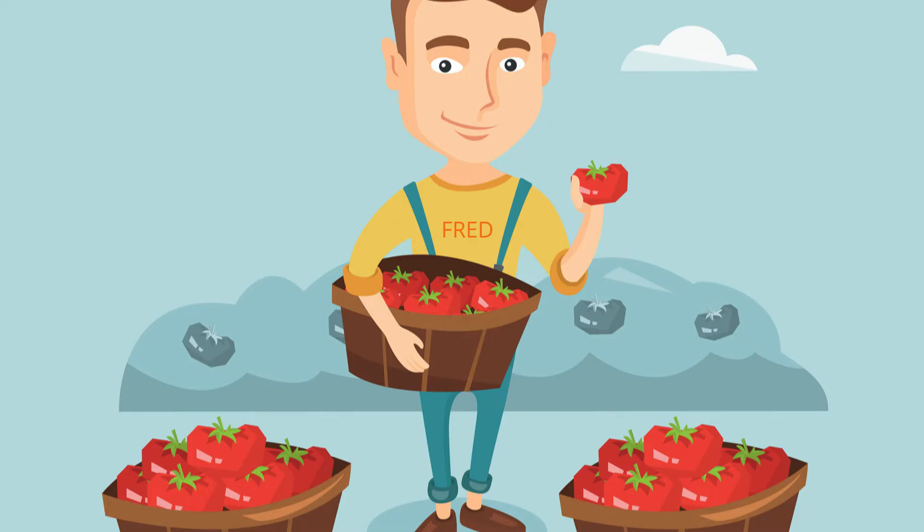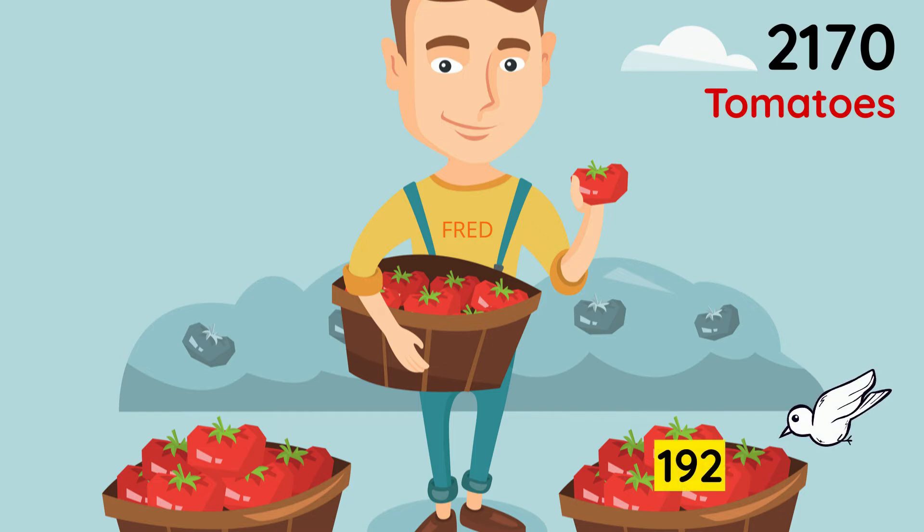Our first example is Fred has tomato plants in his backyard. This year the plants grew 2,170 tomatoes. If the birds had eaten 192 and the bugs had destroyed 540 tomatoes, how many tomatoes did Fred actually harvest?